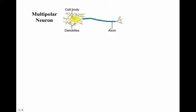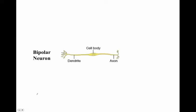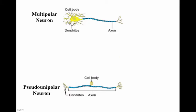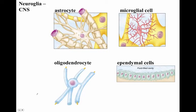We take a look at three different types of neurons: the multipolar neuron, which is the most predominant, bipolar neurons, and pseudounipolar neurons. When we get into the brunt of what our brains are made of, the majority of brain mass is actually neuroglia — neuro plus glia, where glia means glue. We have four neuroglia cells: astrocytes, microglial cells, oligodendrocytes, and ependymal cells.